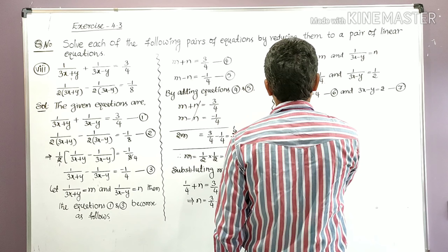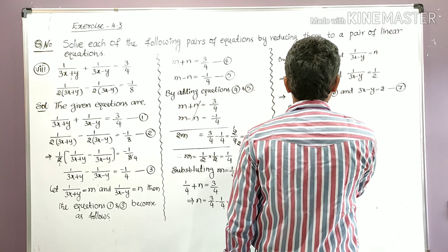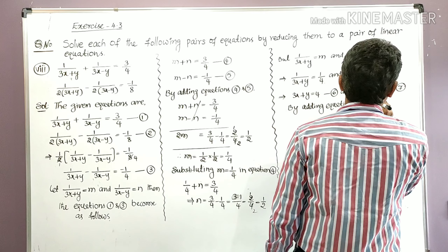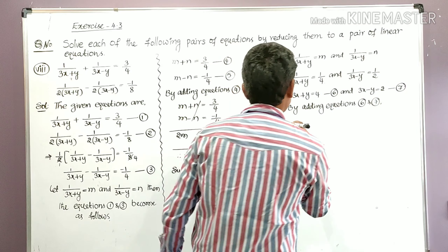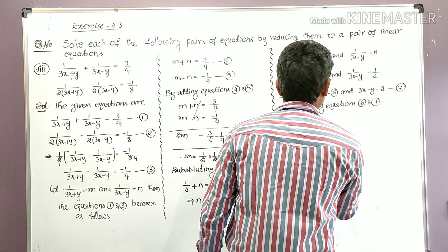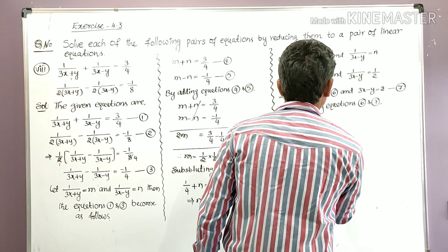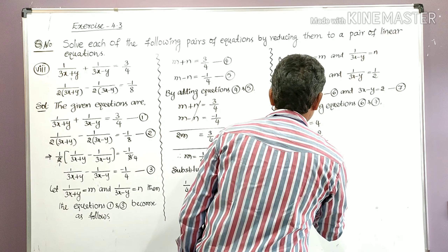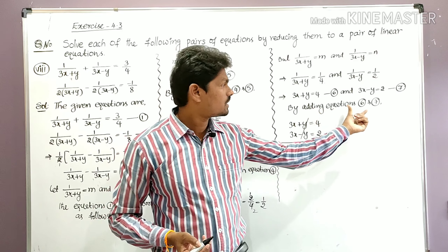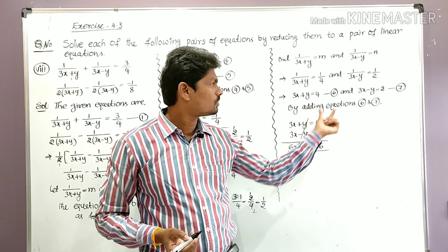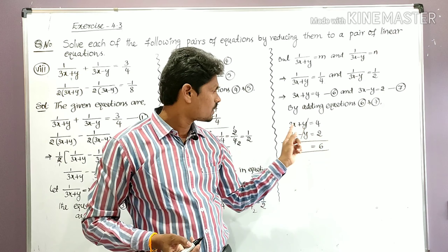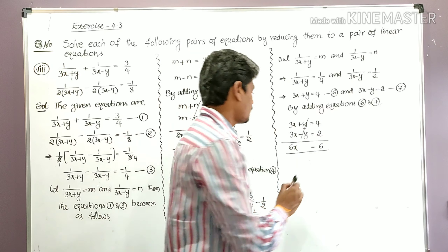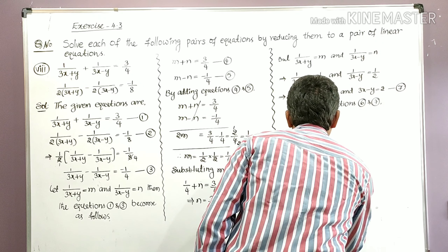By adding equations 6 and 7: equation 6 is 3x + y = 4 and equation 7 is 3x − y = 2. Adding these: 3x + 3x = 6x, and +y − y gets cancelled. 4 + 2 = 6. Therefore x = 6/6 = 1.